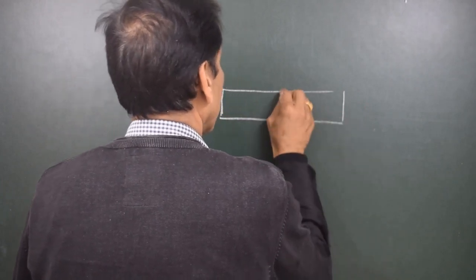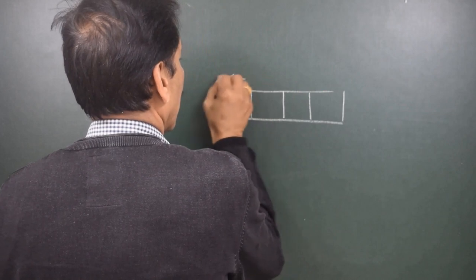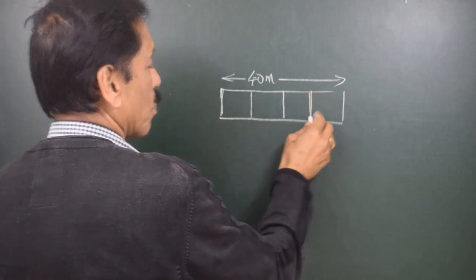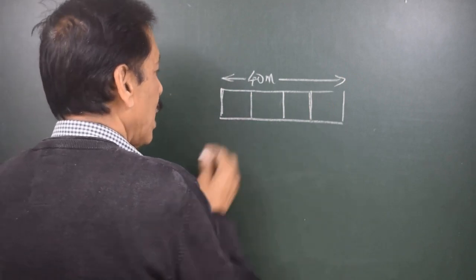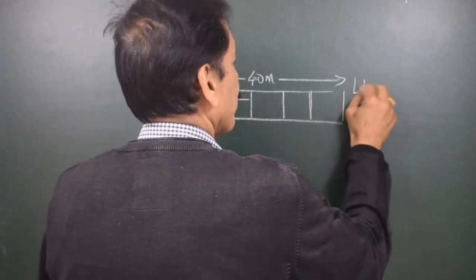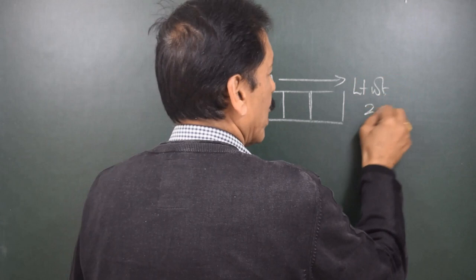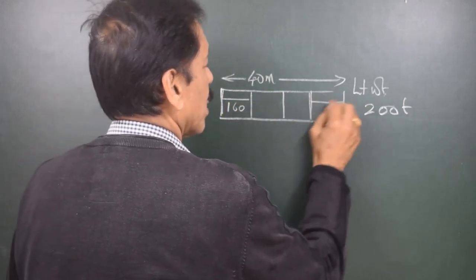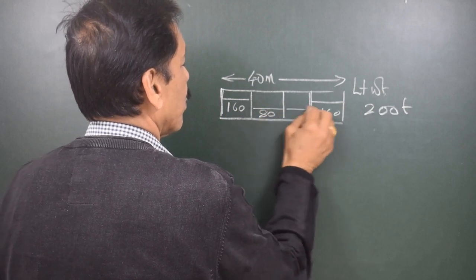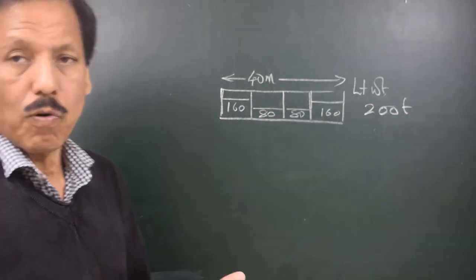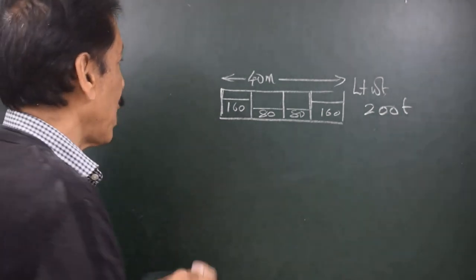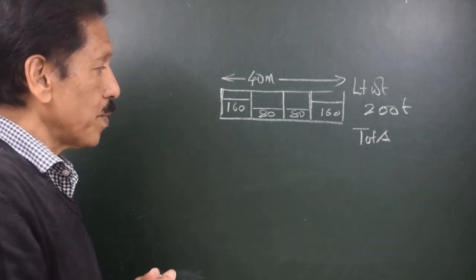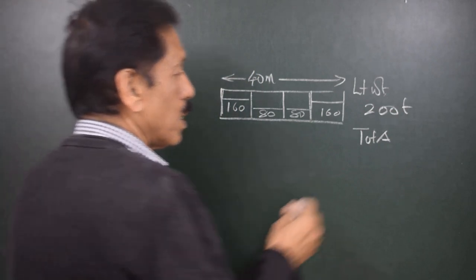Suppose there is a box vessel of length 40 meters with 4 holds, each hold being 10 meters long. The lightweight of the ship is 200 tons. There is 160 tons in hold 1, 160 tons in hold 4, and 80 tons in hold 2 and 80 tons in hold 3. The total buoyancy force in tons must equal total displacement, which is 200 (lightweight) + 320 + 160 = 680 tons.